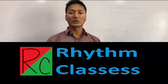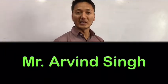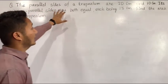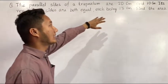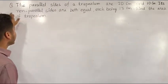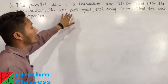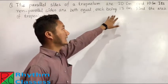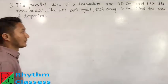Hello students, welcome to Rhythm Classes. My name is Arvind Singh and today's question is: The parallel sides of a trapezium are 20 cm and 10 cm. Its non-parallel sides are both equal, each being 13 cm. Find the area of the trapezium.